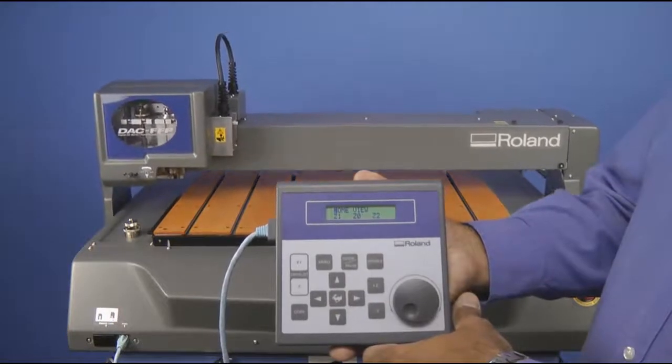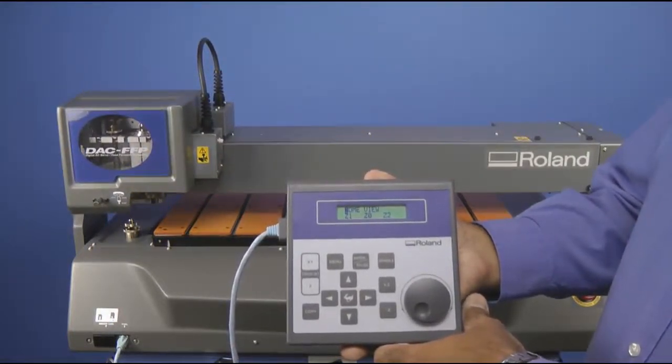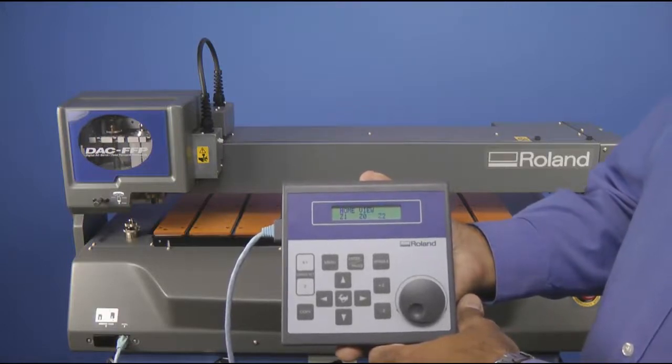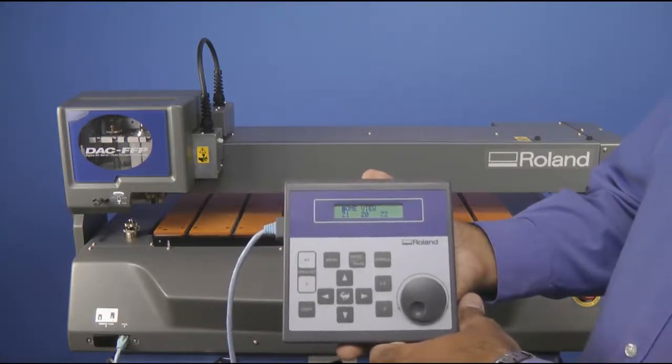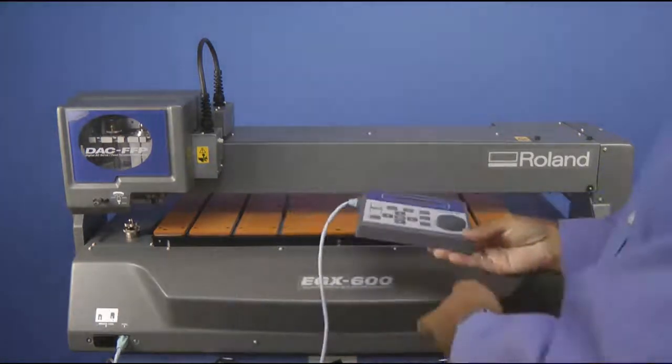This will move the machine to the X, Y origin position. Now we are ready to install and zero out the Character and Braille Dot Cutters.